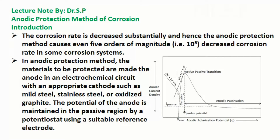The corrosion rate is decreased substantially, and the anodic protection method causes even 5 orders of magnitude — that is 10 to the power 5 — decreased corrosion rate in some corrosion systems. The materials to be protected are made the anode in an electrochemical circuit with an appropriate cathode such as mild steel, stainless steel, or oxidized graphite. The potential of the anode is maintained in the passive region by a potentiostat using a suitable reference electrode.